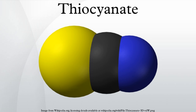SCN is one of the pseudohalides, due to the similarity of its reactions to that of halide ions. Thiocyanate used to be known as rhodanide because of the red color of its complexes with iron.